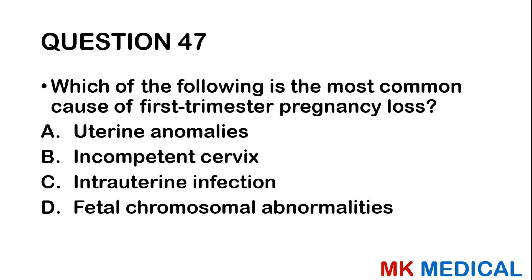Question forty-seven: Which of the following is the most common cause of first trimester pregnancy loss? A, uterine anomalies; B, incompetent cervix; C, intrauterine infection; D, fetal chromosomal abnormalities. Most likely the answer is fetal chromosomal abnormalities.